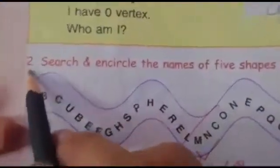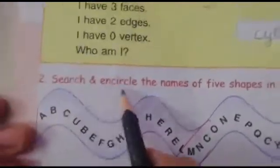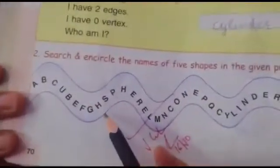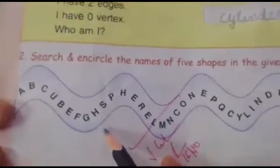Question number 2: Search and encircle the names of five shapes in the given puzzle. Now we have done all the five shapes: sphere, cube, cuboid, cone, and cylinder. Now we have to encircle the names of the shapes which are hidden here. Okay, now find them out.